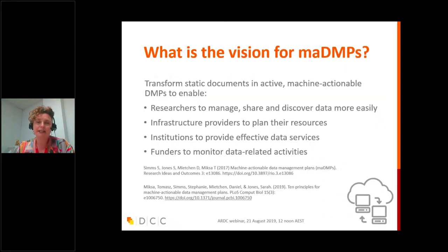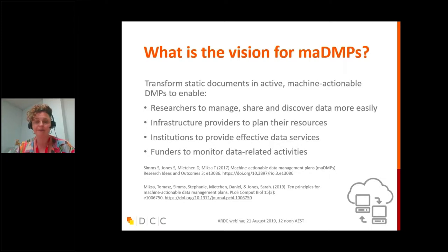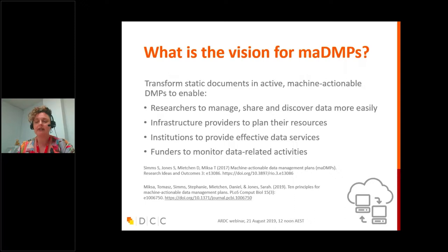The vision for machine actionable data management plans goes beyond a static document into something more useful to different stakeholders. A machine actionable DMP can help infrastructure providers plan their resources — they know the storage requirements and can plan capacity needed. It also helps funders to monitor their data-related activities. We did a workshop to gather requirements for machine actionable DMPs and since then we've published a paper on 10 principles for DMPs, so there's background literature if you're interested in this area.